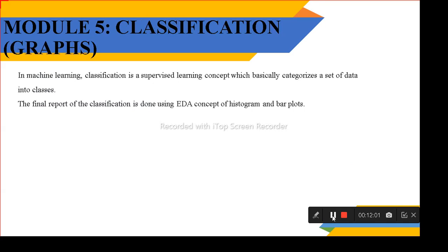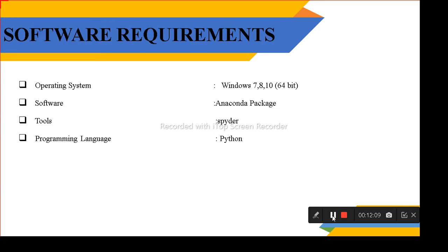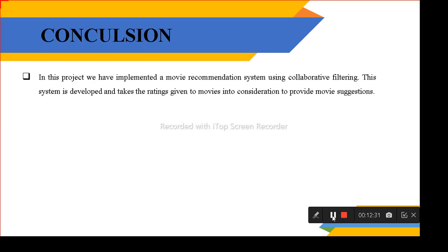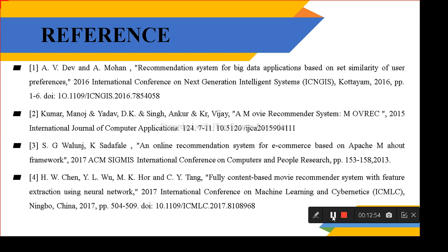Classification of graphs is done using the EDA concept with histograms, based on supervised learning classification using a categorical set of data. Software requirements: Windows operating system 7 or 8, 64-bit; software includes the Anaconda package, Spyder IDE, and Python programming language. Hardware: Hard disk 500GB, RAM 4GB minimum (8GB recommended), processor i5 or higher. In this project, we are using Scikit-learn, NLP, collaborative filtering, and content-based filtering to recognize the word and provide movie suggestions. Thanks.